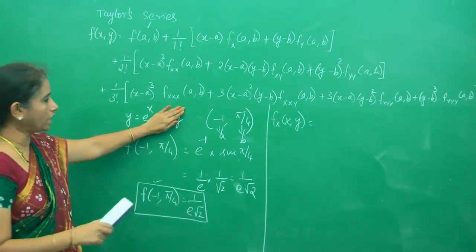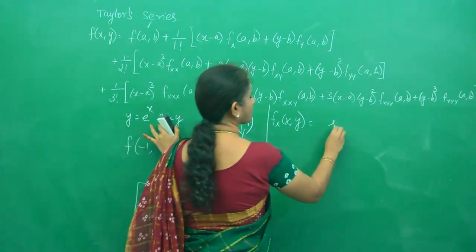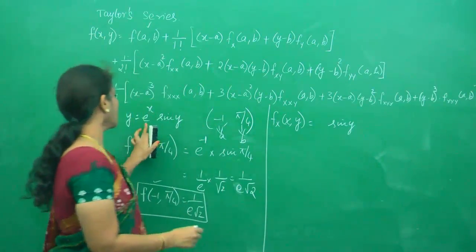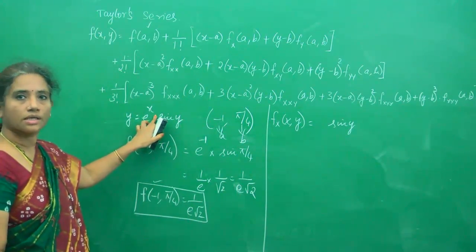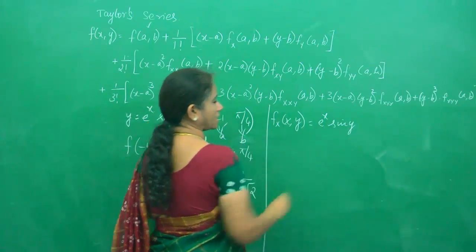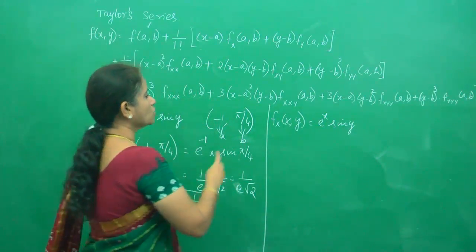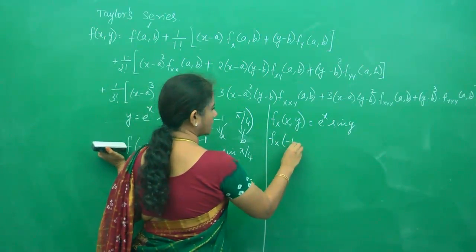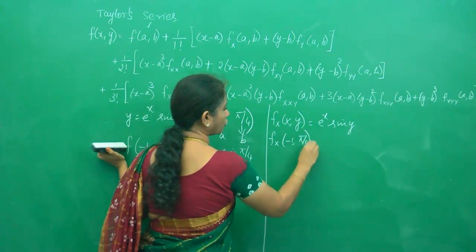So let me write sin y to start with, because that is a constant. And the derivative of e^x is just e^x. So f_x(x,y) = e^x sin y. Now I need to do f_x(-1, π/4).